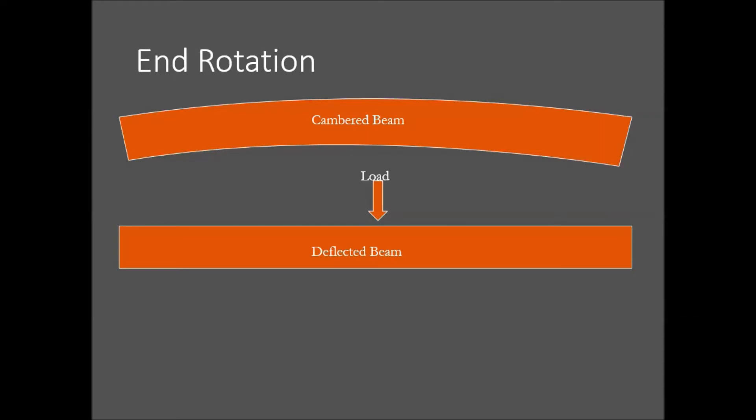End rotation can be explained as follows. The top beam is unloaded, therefore the camber is still in the beam. Notice the ends are not plumb. The bottom beam is deflected. During the deflection, the ends of the beam rotate into a plumb position.